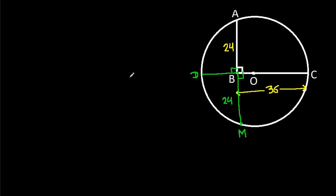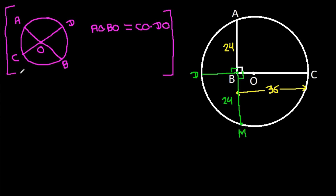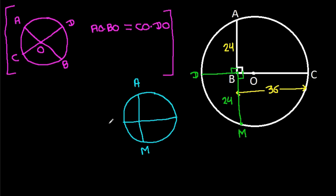And now, in any circle, if two chords AB and CD intersect at O, then AO times BO will be equal to CO times DO. And here in this circle, two chords AM and DC are intersecting at B.